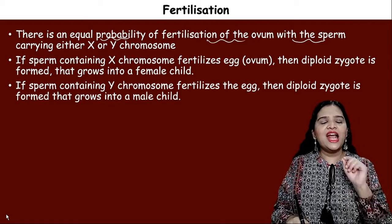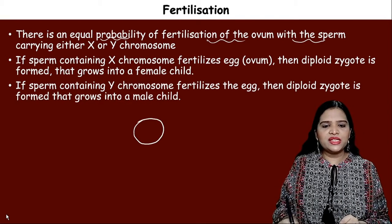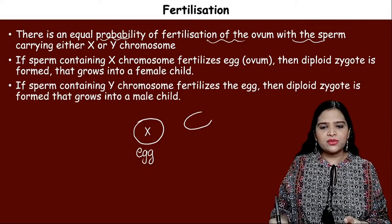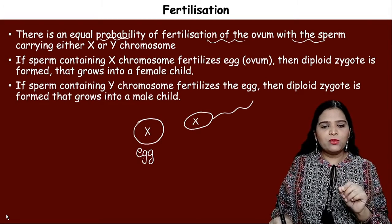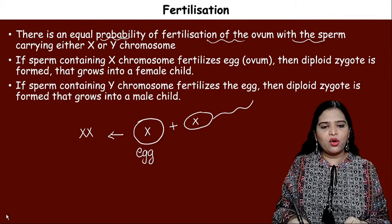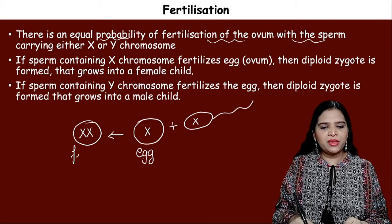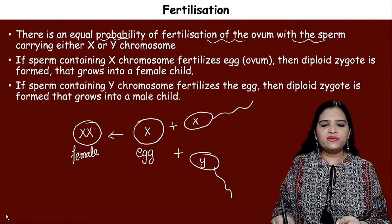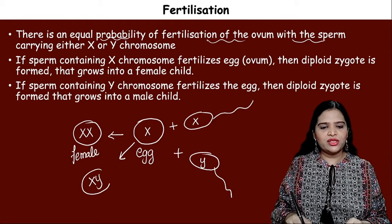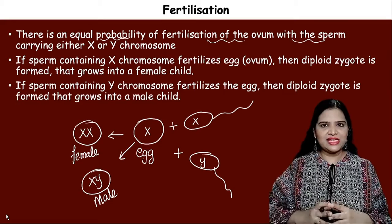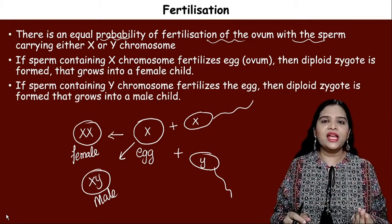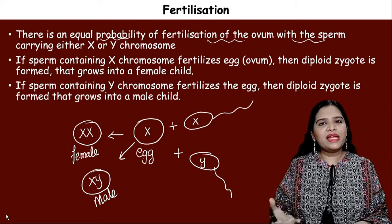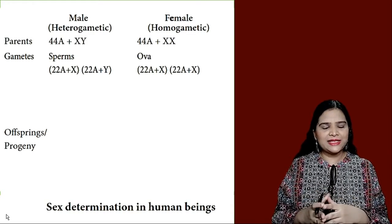During fertilization there is equal probability of the egg being fertilized by a sperm carrying either X or Y chromosome. If a Y-carrying sperm fertilizes the X-carrying egg, the zygote is XY — a male baby. There is a 50-50 percent chance in every pregnancy of producing a male or female zygote.